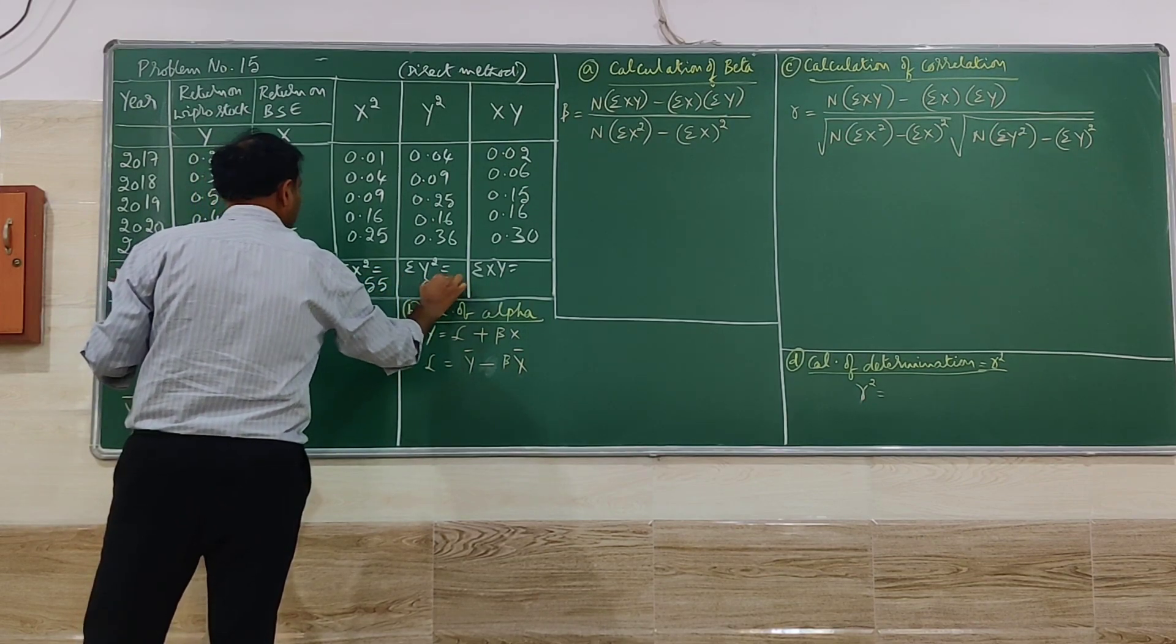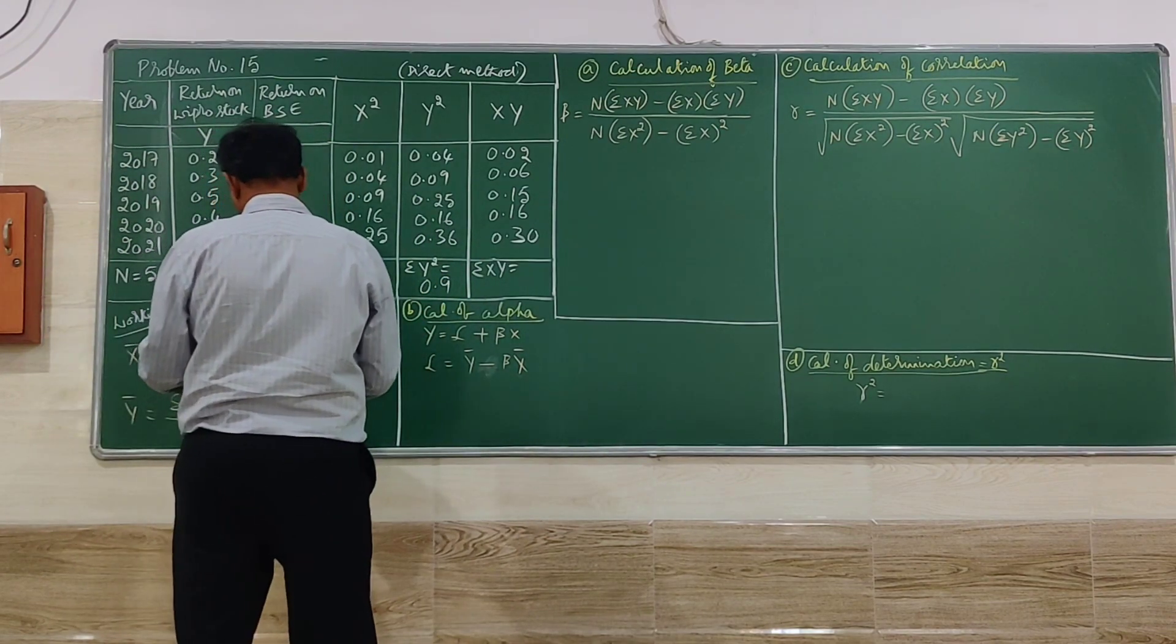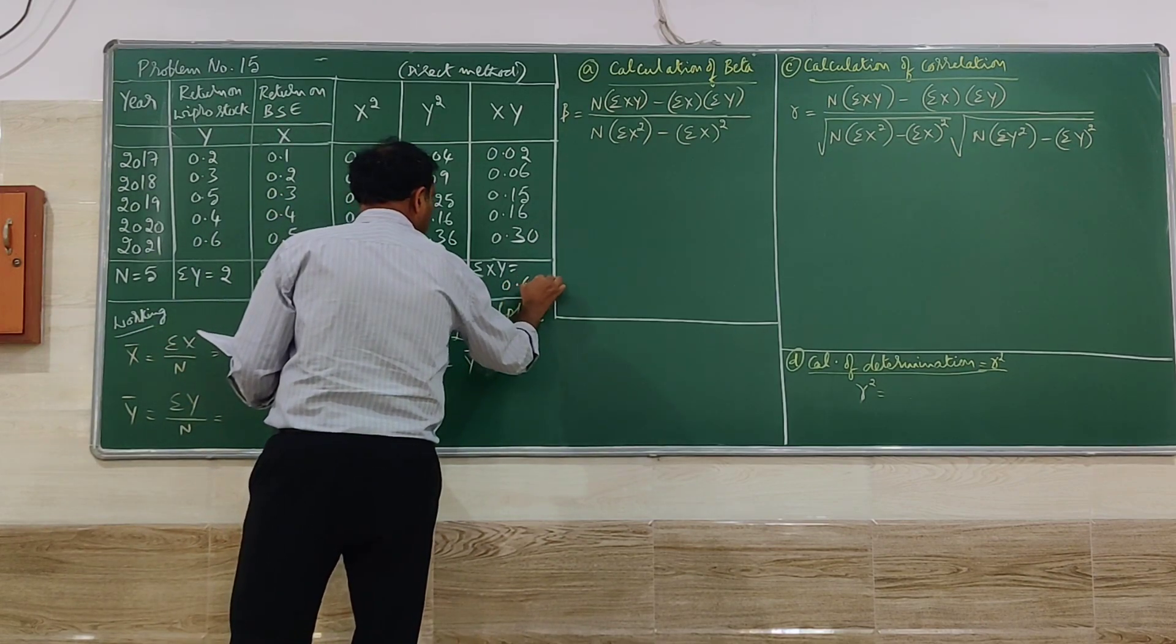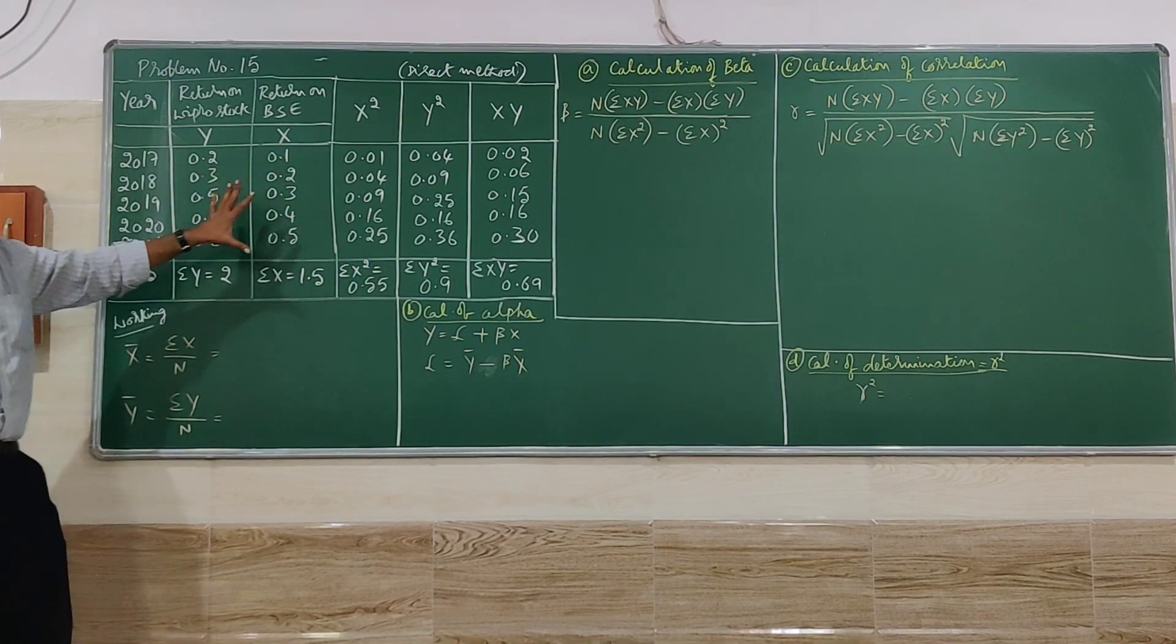Summation Y square 0.9. Summation XY 0.69. So you have to check these values once. Double check. Then we have to go for the working.